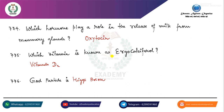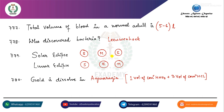God particle is Higgs boson. The total volume of blood in a normal adult is 5-6 liters. Who discovered bacteria? Leeuwenhoek.